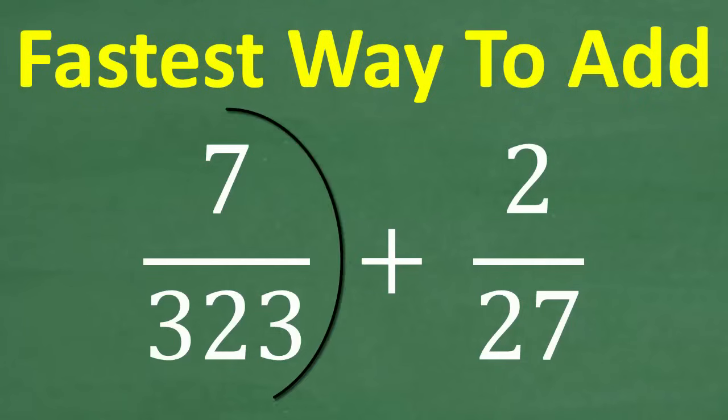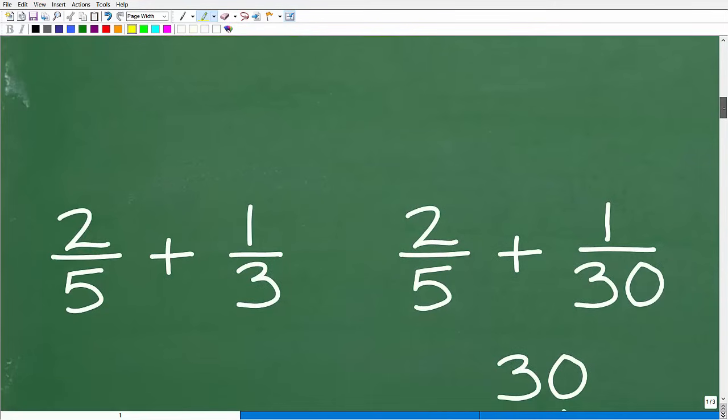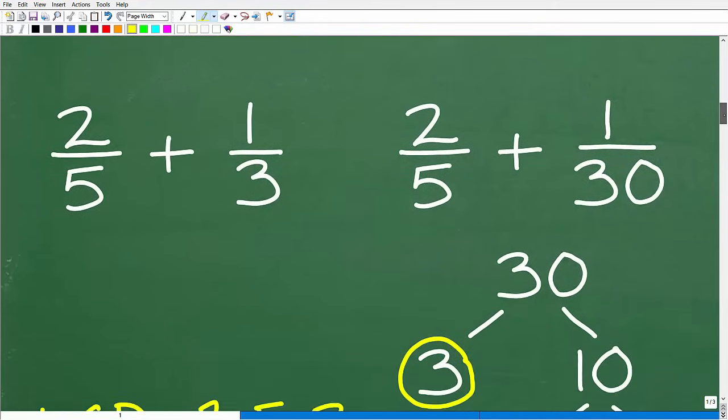All right, so 7 over 323 plus 2 over 27. So one thing that I don't want you to do is to take 7 divided by 323, get some sort of decimal, and then take 2 and divide it by 27 and get some sort of decimal and add those up. So that's not what we're talking about. I want your answer to be a fraction. All right, so as I indicated, you cannot add or subtract fractions unless you have the same denominator. So let's take a look at some simple examples here just to kind of review how to find the LCDs.